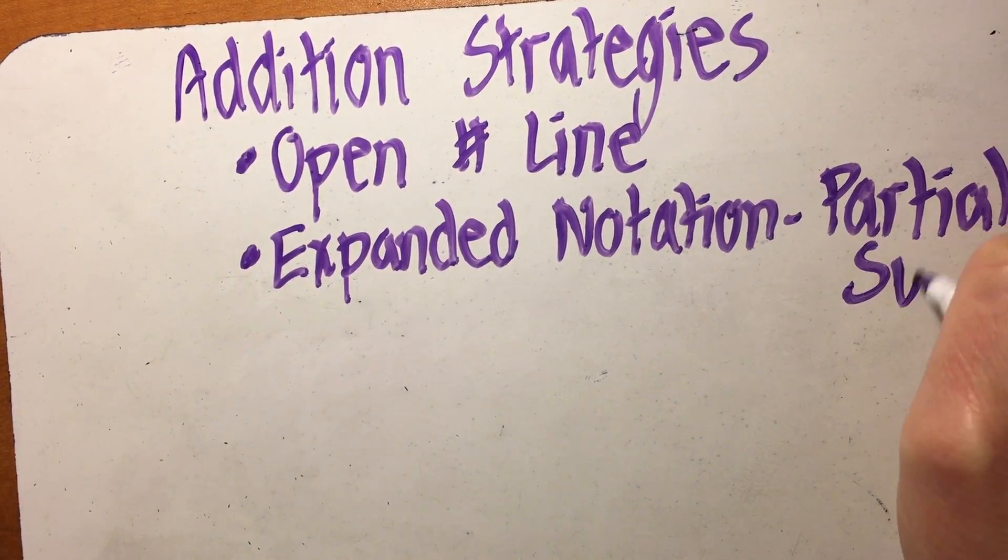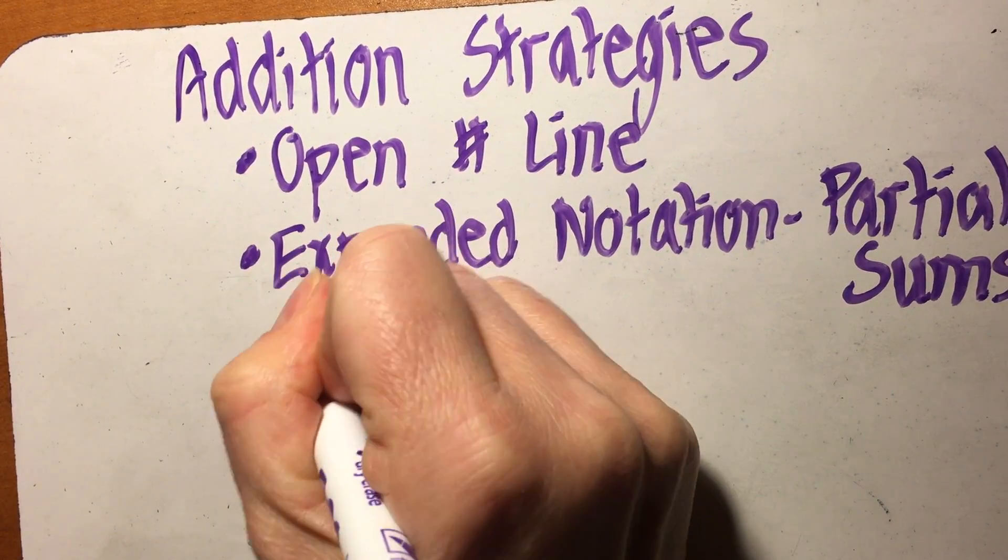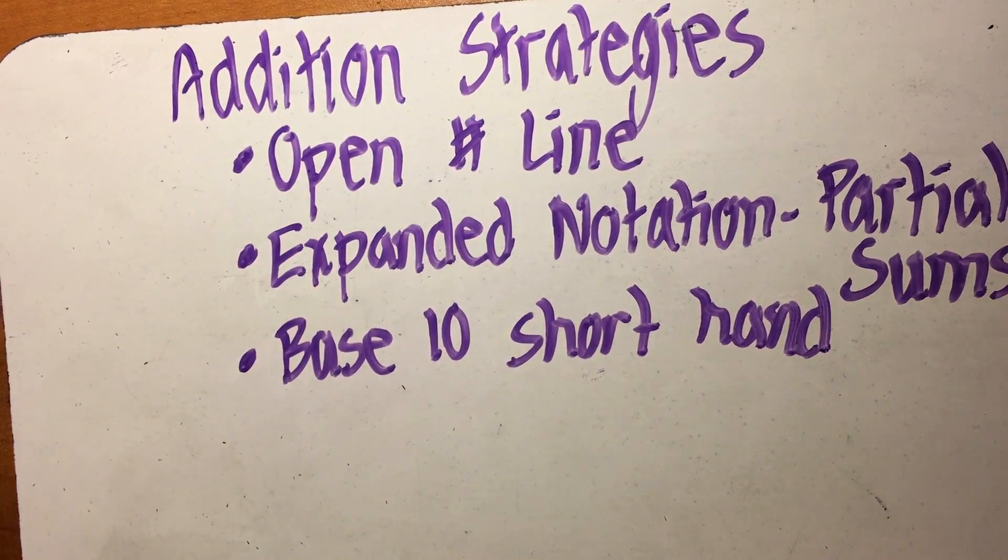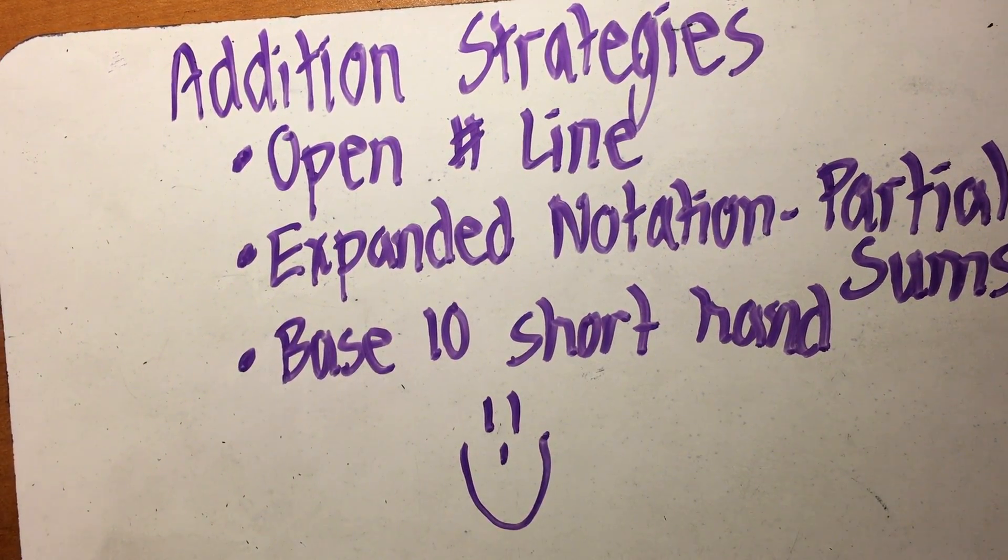We're going to cover the partial or open number line, the expanded notation, which is what your kids came up with. It's also called partial sums and base ten shorthand. I promise you it's not scary.